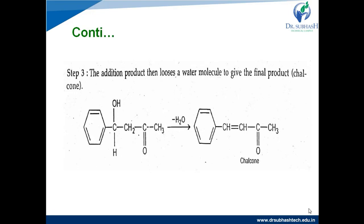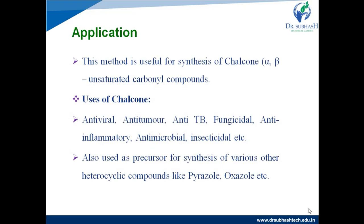Step 3 is the dehydration step. In the nucleophilic addition product, a water molecule is lost, forming the alpha-beta unsaturated compound, that is chalcone. Dehydration occurs as follows: the carbonyl carbon is attached to the adjacent alpha carbon, which is also attached to the beta carbon. H plus from the alpha carbon and OH minus from the beta carbon are removed as a water molecule, and a double bond between alpha and beta carbons forms — giving the alpha-beta unsaturated carbonyl compound, which is chalcone.